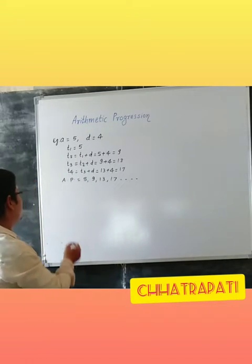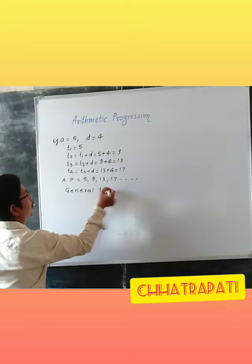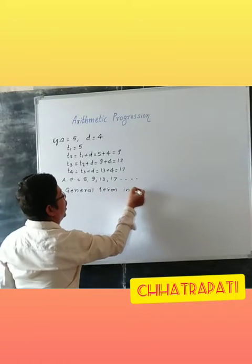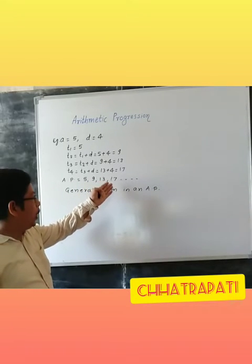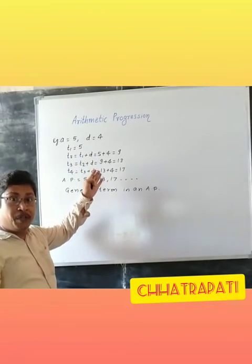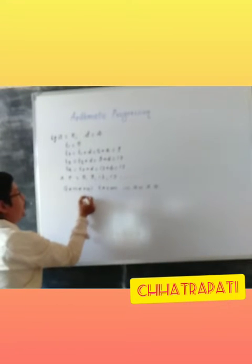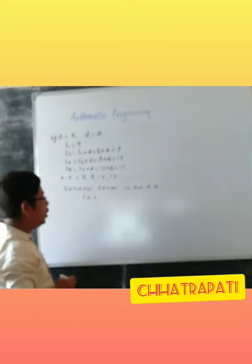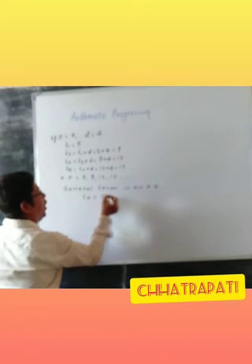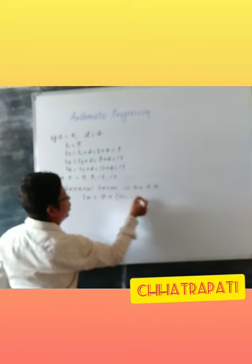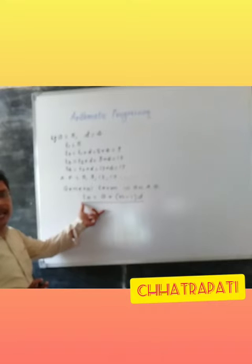Now another example — the general term in AP. Suppose we have given only 4 terms, so we can calculate those 4 terms. But if we require the 25th term at a time, we can use the general term formula. The general term is denoted by TN. The formula to calculate the general term of an AP is TN = A + (N − 1) × D. By using this formula, we can calculate any term in an AP.